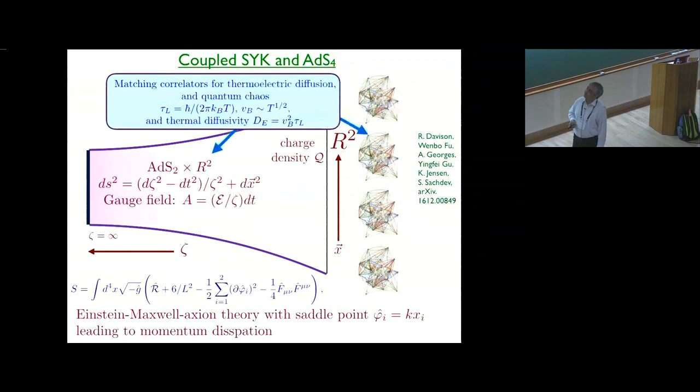In particular, both of these theories have, first of all, the maximal chaos tau L. But now since you have space, you can compute the butterfly velocity. So you can compute it in this holographic theory and you find a butterfly velocity with square root of temperature. And in our paper, we computed it in this theory, following the earlier work of Gu, Stanford, and Qi, and again you find butterfly velocity is square root of temperature.